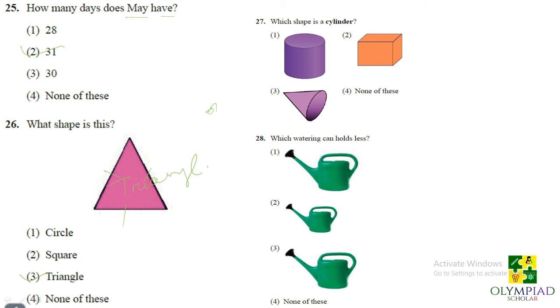Which shape is a cylinder? So this is a conical shape. This is a box or cuboidal shape. Or you can say this is the answer which is option 1 and which is a cylinder.